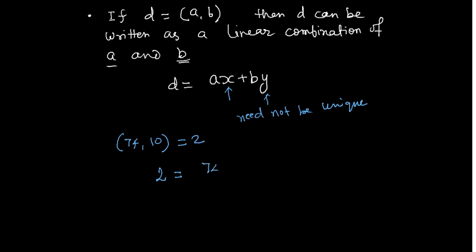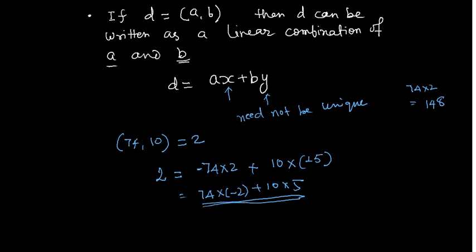So let's do this. 74 into 2 minus 10 into, or let's write, so 74 into 2 is nothing but 148. So if I write this as, I write this as 74 into minus 2 plus 10 into 15. So this is 2. And you probably have seen that this is not unique.